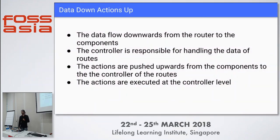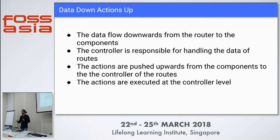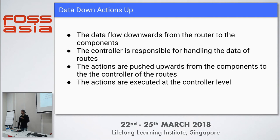One important thing in our application is the data down and action up strategy. We push data from the upper level — routes and controllers — down to the components. All actions are handled in controllers or routes. So for example, event data is transferred to the component and the component is responsible for displaying that data. When we have actions like share, we have a function for that in the controller or route and simply pass the action upward. Everything is done at the controller level.